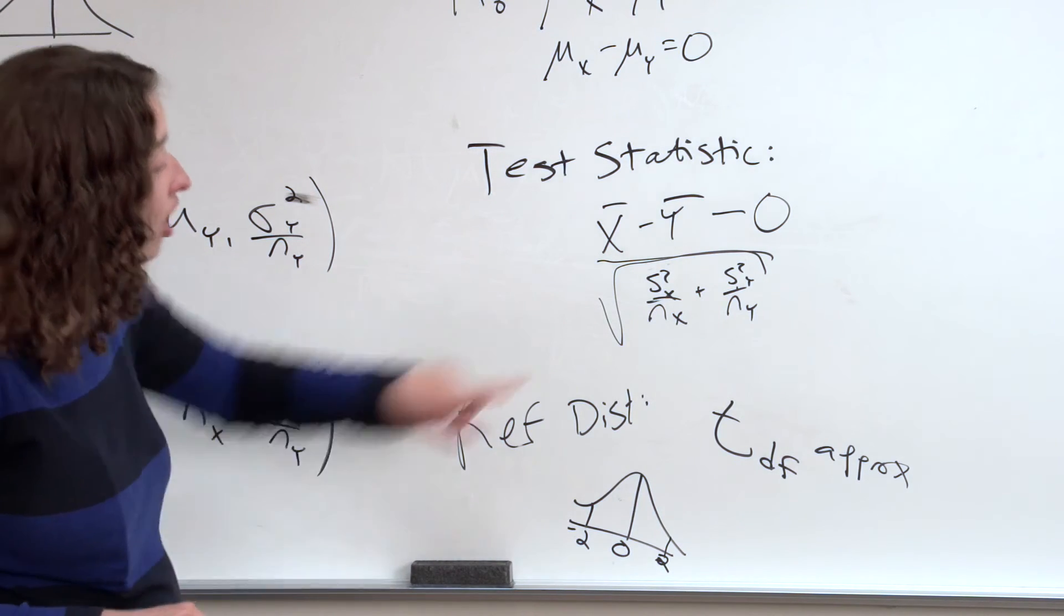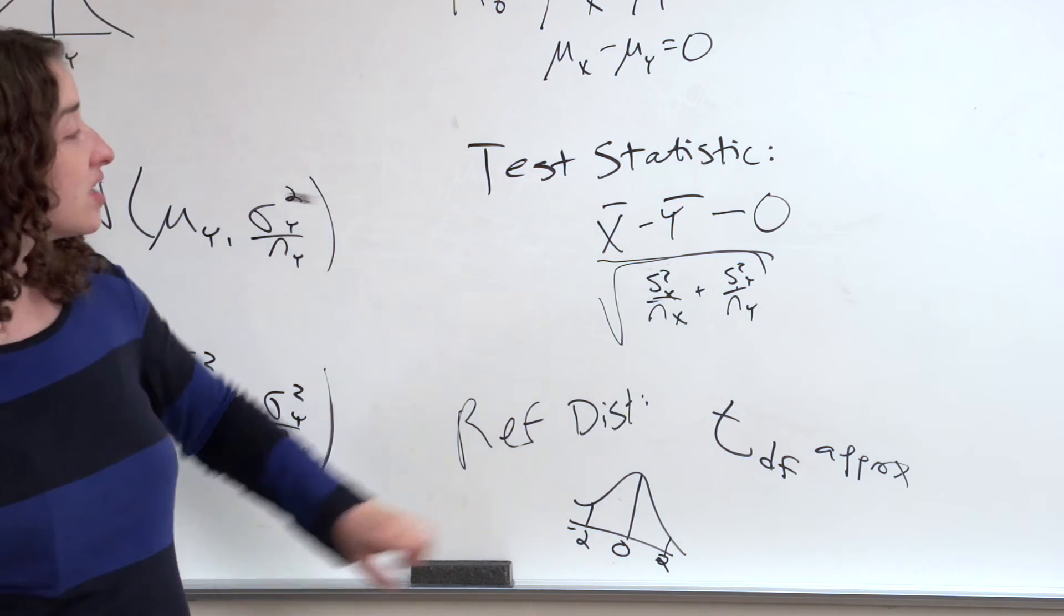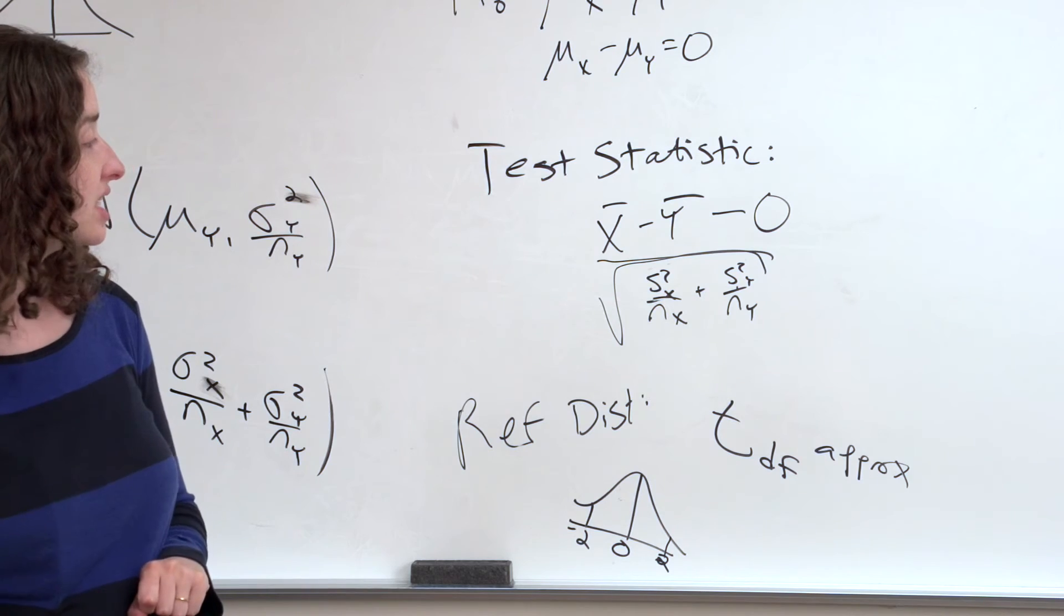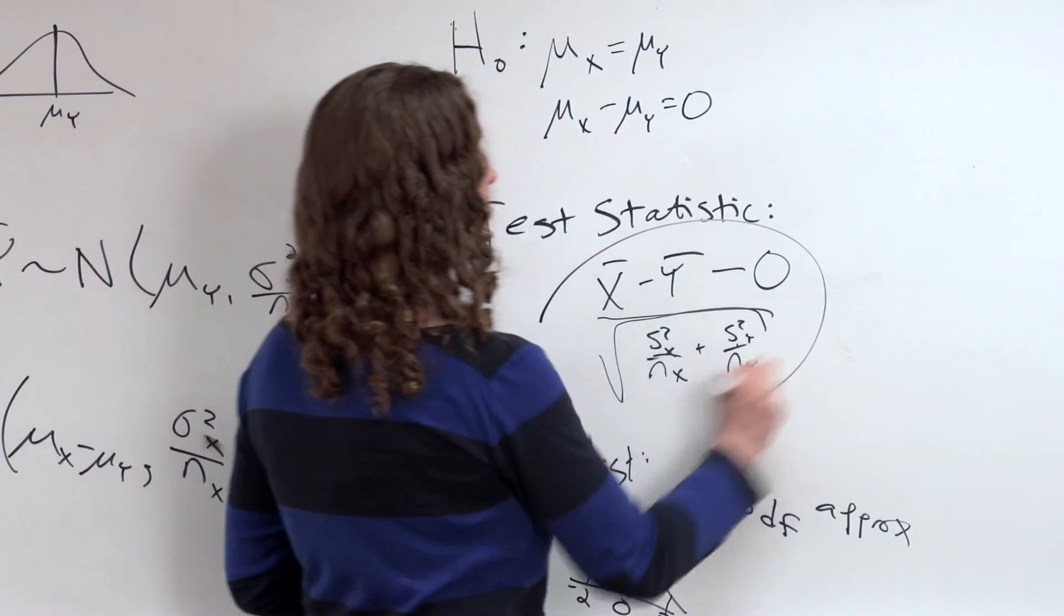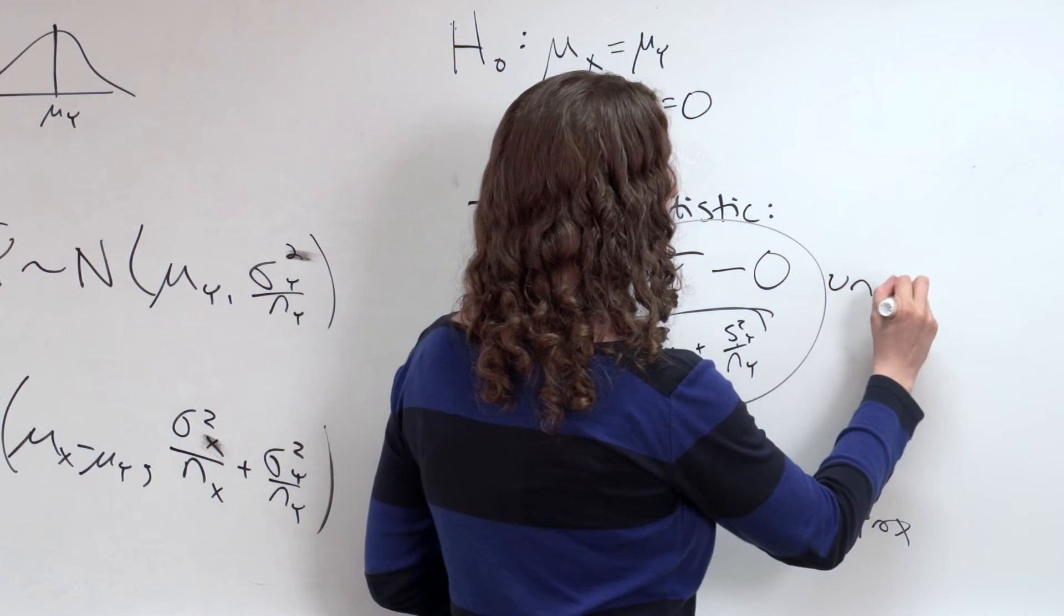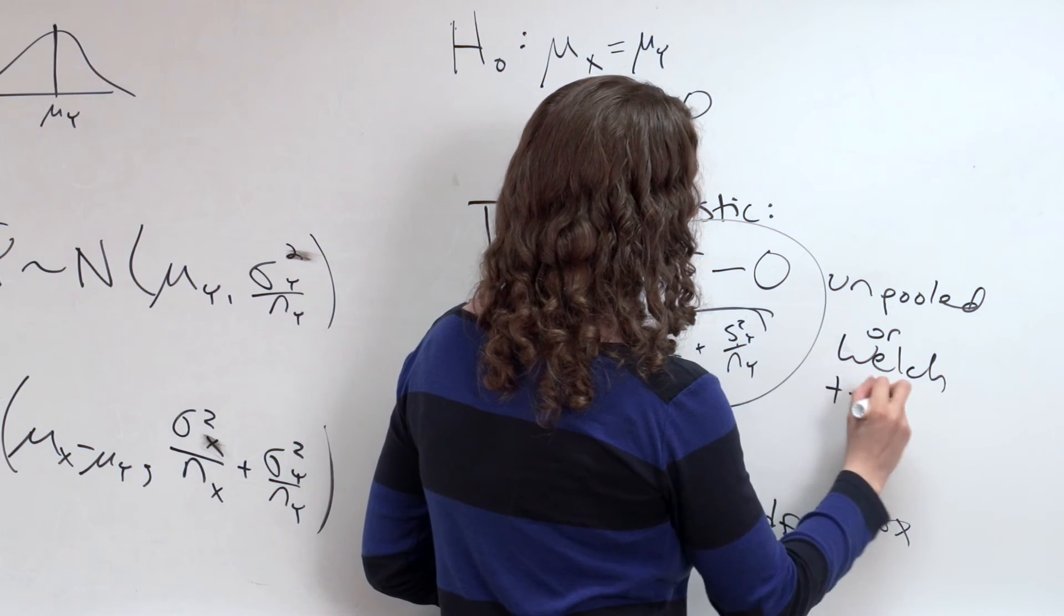Importantly, all I did here was plug in those two variances. So for this particular t-test, for this particular t-test that I've done here, I'm using what's called the unpooled, or Welch, t-statistic.